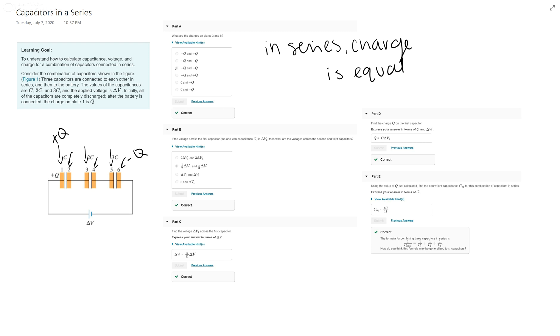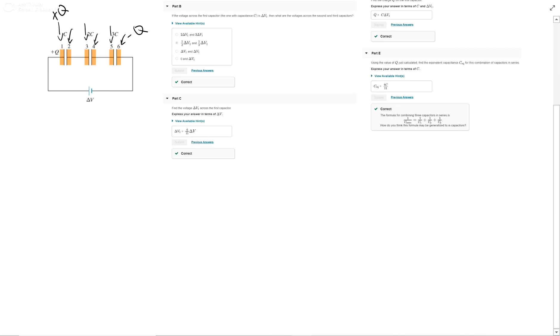Part B actually does have some math that you have to do. And it is if the voltage across the first capacitor is delta V1, what are the voltages against the second and third capacitor? So we're going to remember this equation of Q equals CV. And they tell us that the voltage across the first one is 1. So Q equals CV1.